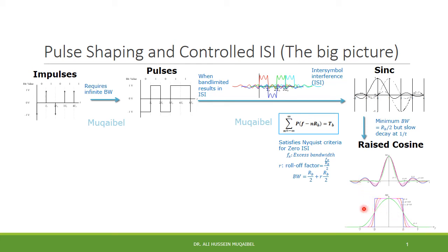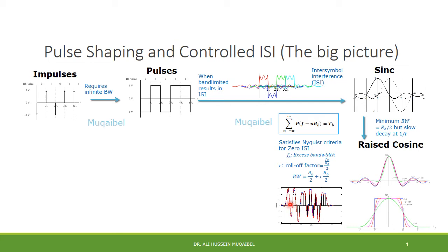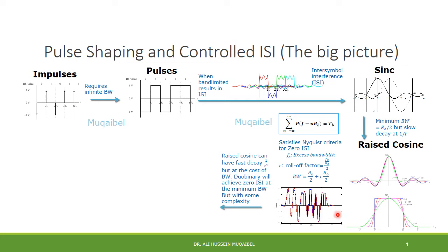We define two new things: the excess bandwidth, which is the amount of extra bandwidth compared with the minimum, and the roll-off factor, which is the ratio of the excess bandwidth to the minimum required bandwidth Rb over 2. For a baseband binary system using raised cosine, the bandwidth equals the minimum Rb over 2 plus the additional part of the spectrum. However, the cost of raised cosine is significant — it costs bandwidth, or alternatively data rate.